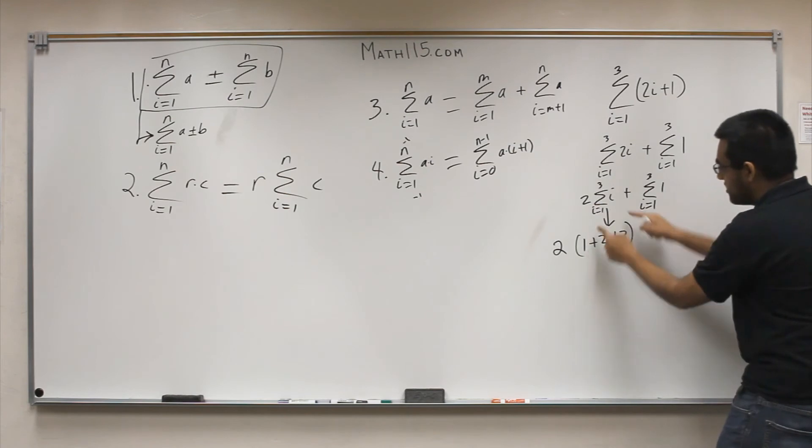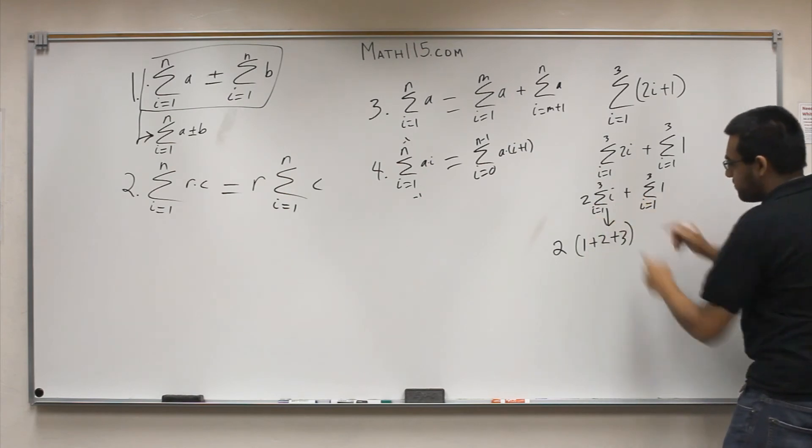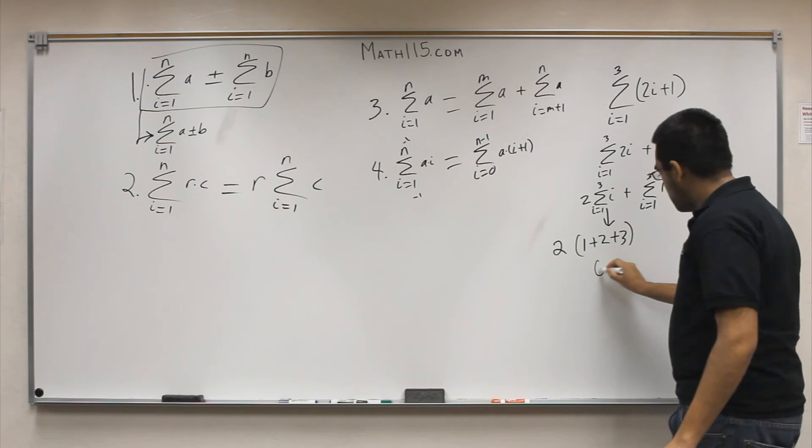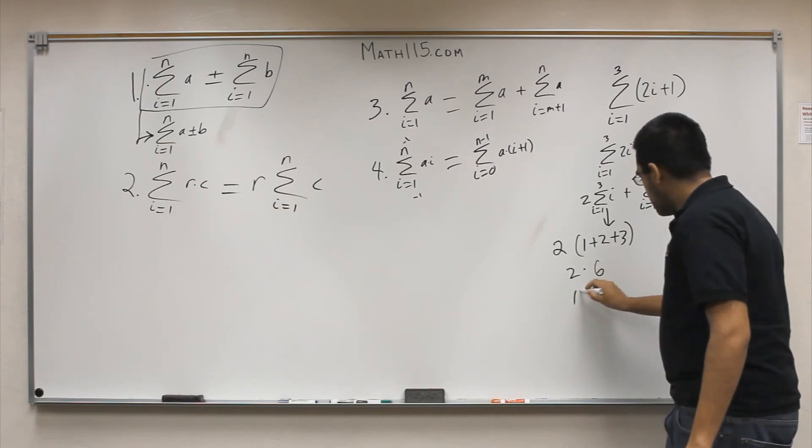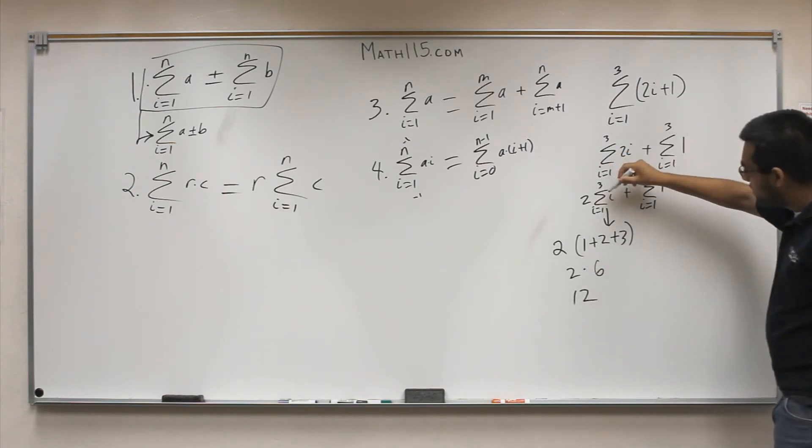Again, what's in parentheses represents this summation here. The answer to this inside is 6, and you multiply it by 2, you get 12. Now what we just did was we solved for the left summation.